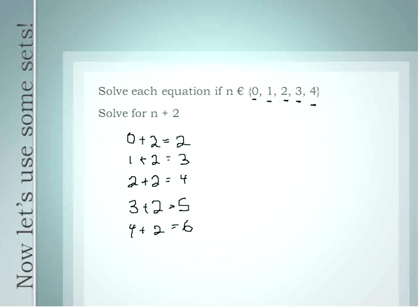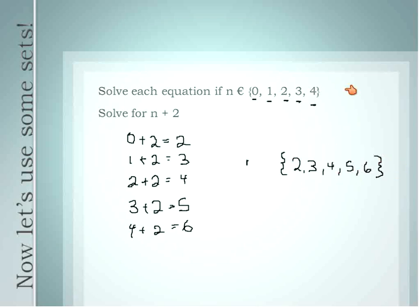So with this expression, our solution set is equal to {2, 3, 4, 5, 6}. This expression has us take whatever our values for n are and add 2. So our solution is just going to be a new set of numbers all increased by 2. The difference here is that you're not getting just one answer — you're getting what we call a solution set: a group of numbers that are all our solutions.